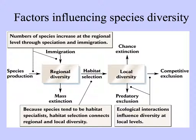This diagram can sum up what we've talked about. Speciation and immigration increases the number of species. Different factors can cause extinction, and habitats select for which species can survive there, influencing local diversity. Where species compete, some are competitively excluded, and some may be eaten to death by predators. At the local level, ecological interactions are very important in influencing diversity, but habitat selection is the factor that affects whether or not you find species in different communities at the larger level.